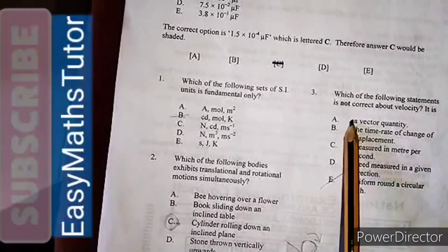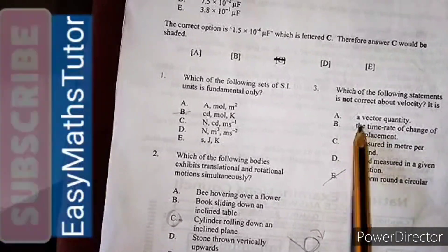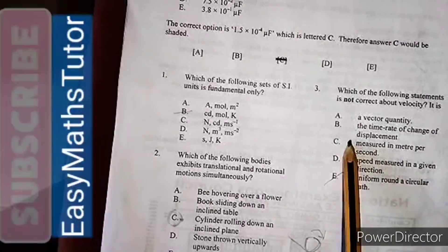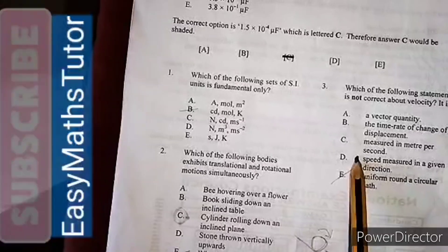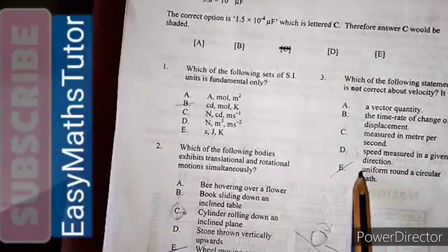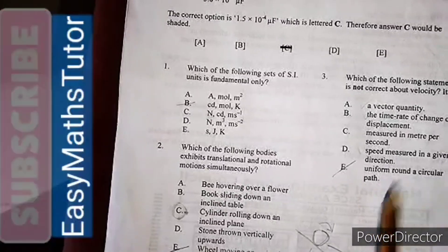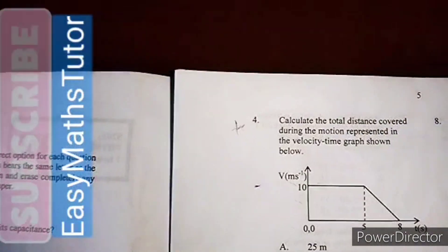Option A: It's a vector quantity - correct. B: The time rate of change of displacement - correct. C: Measured in meters per second, that's the unit - correct. D: The speed measured in a given direction - correct. E: Uniform round a circular path - that is wrong. So E is the correct answer.